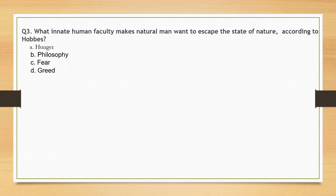What innate human faculty makes natural man want to escape the state of nature, according to Hobbes? Options: hunger, philosophy, fear, greed. The correct option is option C: fear.